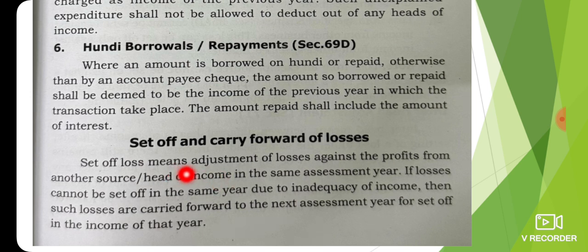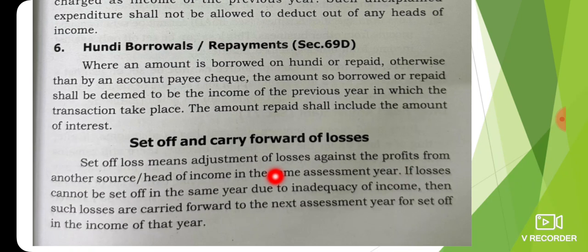Now we have to discuss set off and carry forward of losses. Set off of losses means adjustment of losses against profit from another source or head of income in the same assessment year. If losses cannot be set off in the same year due to inadequacy of income, then the losses are carried forward to the next assessment year for set off against the income of that year.